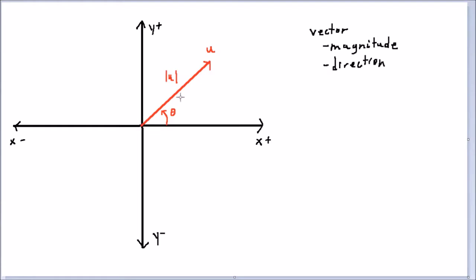This vector is pointing in both positive x and positive y, so we can split it into two vectors — one pointing in the x direction and the other in the y direction. Starting at the origin, we draw a green vector going in the positive x direction. If we drop a perpendicular from a point on vector u down to the x-axis, that forms a right angle, landing at the tip of this new vector. This x component of vector u is called u sub x — it represents only the part of u pointing in the x direction.